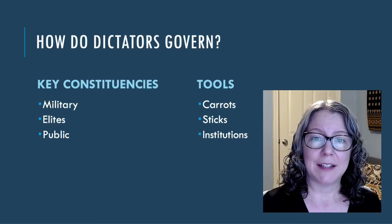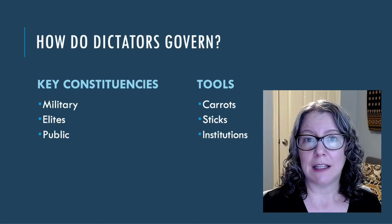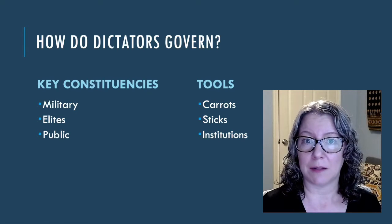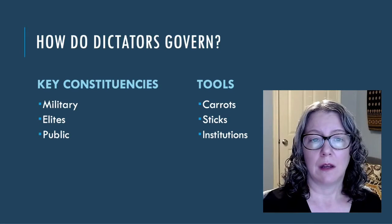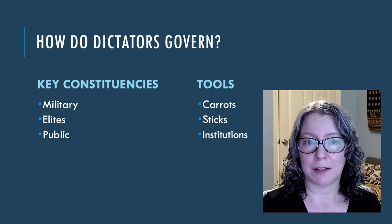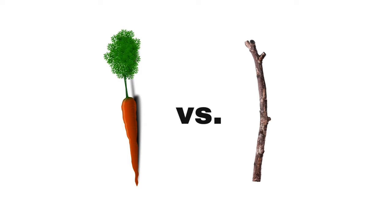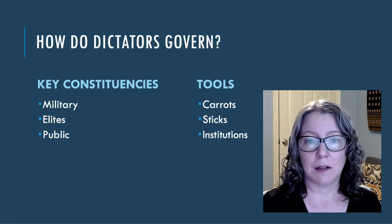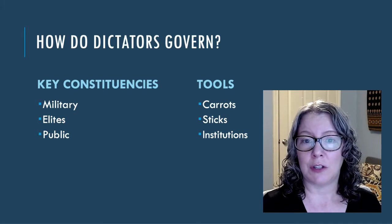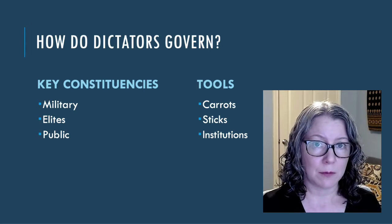No matter what type of ruler a dictator is — a monarch, a general, or an ideologue — he, and dictators are almost always men, never rules alone. A dictator needs to manage three key constituencies to maintain his power: the military, the elite, and the public. He normally does so in two main ways: offering a combination of carrots and sticks — benefits for compliance and repression for dissidents — and building institutions to channel activity and opinion to support the regime.